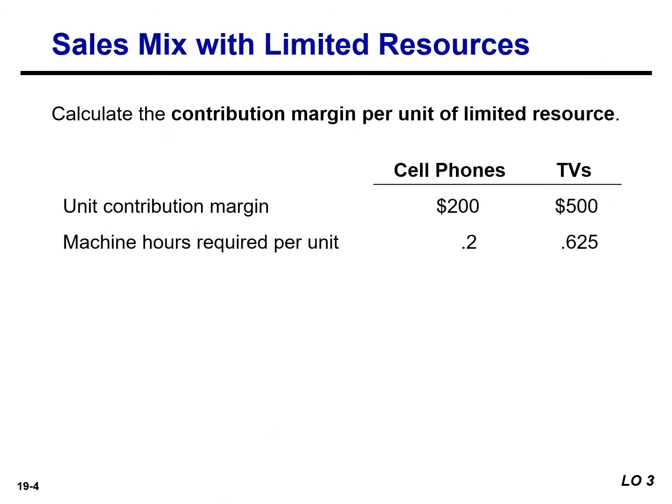The TVs may appear to be more profitable since they have a higher unit contribution margin of $500, versus the cell phones with a contribution margin of $200. However, the cell phones take fewer machine hours to produce than the TVs. Therefore, it is necessary to find the contribution margin per unit of limited resource — in this case, contribution margin per machine hour.